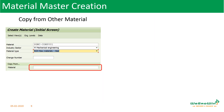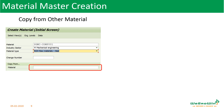There are some other ways to create material master. A new material master can be created by copying from another material. For example, if there is a raw material already there and you want to create another raw material, we can refer to that raw material and create the new one — it is like a copy function. But at the same time, we have to be very careful that we are selecting the right material to copy from.